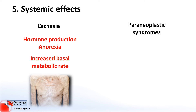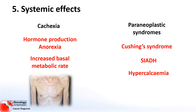Lastly in terms of systemic effects, it's worth mentioning paraneoplastic syndromes. Paraneoplastic syndromes are basically collections of symptoms that are a result of a cancer but not related to the local effects of a tumour. Some examples of this are Cushing's syndrome, which involves a release of a hormone called ACTH; SIADH, which is caused by a release of antidiuretic hormone; hypercalcemia as mentioned before; and neuropathy, which is nerve problems related to cancers. I'll do a video later on where we'll talk much more about paraneoplastic syndromes.